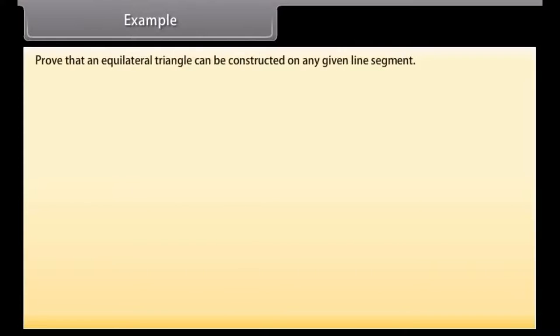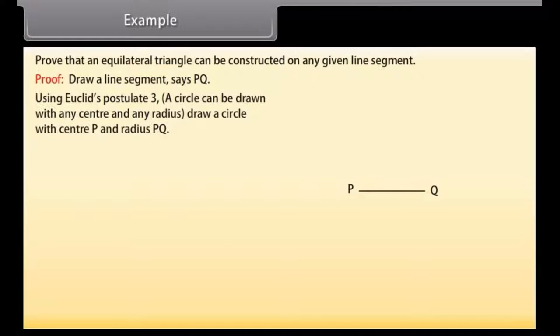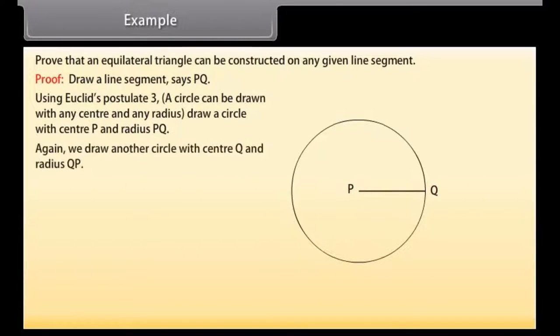Example. Let's solve an example now. Prove that an equilateral triangle can be constructed on any given line segment. Draw a line segment, say PQ. Using Euclid's postulate 3, which says that a circle can be drawn with any center and any radius, we will draw a circle with center P and radius PQ. Again, we draw another circle with center Q and radius QP.